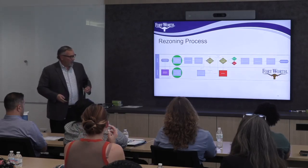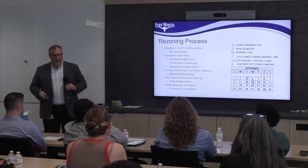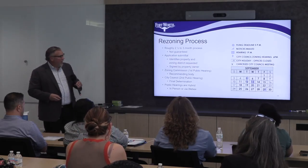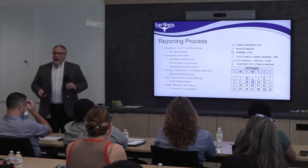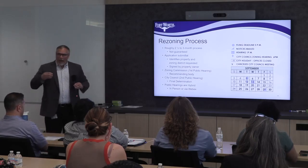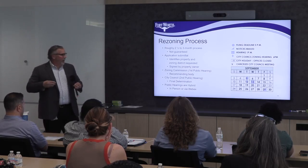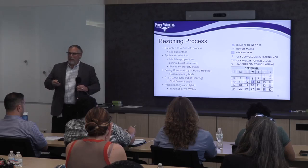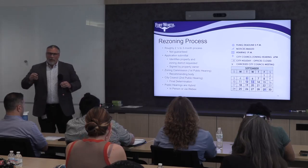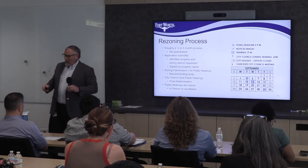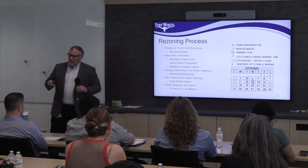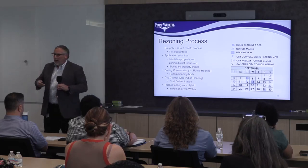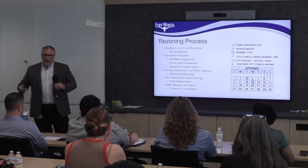Let's talk about the rezoning process. It's roughly a two-and-a-half to three-and-a-half month process. There's an application submittal, and there are two public hearings: the zoning commission public hearing and then the council public hearing. The zoning commission is the formal recommending body for zoning changes — they make a formal recommendation, and then it goes over to city council for the final determination.